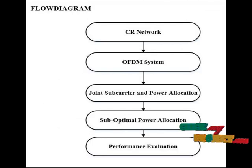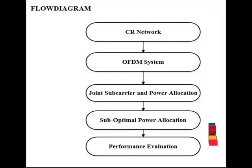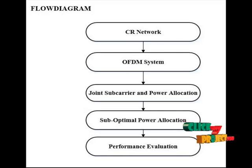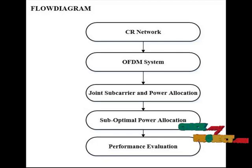Next we are going to discuss the architectural diagram of the proposed system. It consists of five major blocks: CR network, OFDM system, joint carrier power allocation, suboptimal power allocation, and performance evaluation.